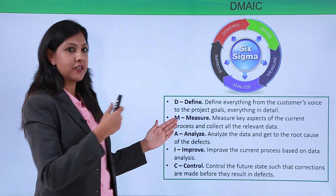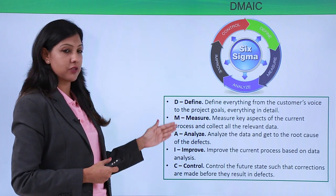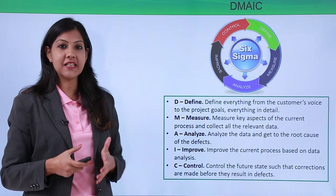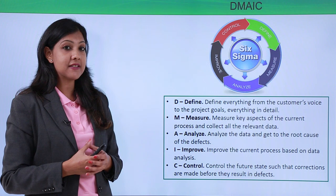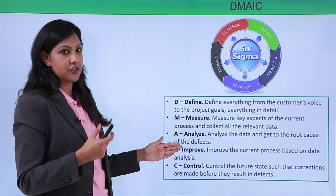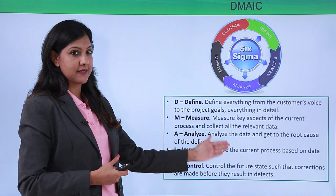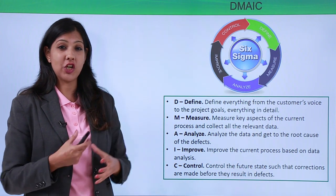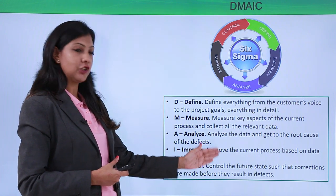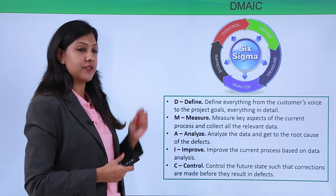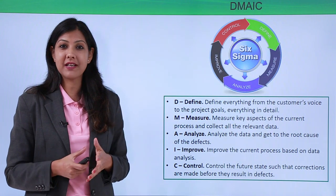The second part of DMAIC is Measure — you need to measure the key aspects of the current processes and collect all the relevant data. Third is Analyze — after collecting the data, you analyze it to understand the root cause of defects. Next is Improve — you improve the current processes based on the data and your analysis. Lastly, Control — you control the future state so that corrections are made before they result in defects. This is DMAIC, which applies to your current processes.